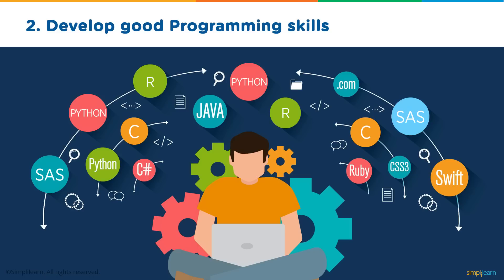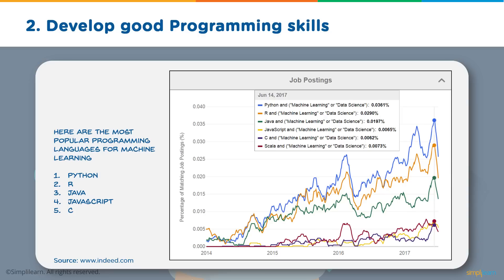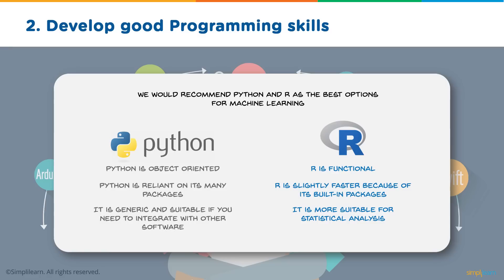Your next step to becoming a machine learning engineer is to develop good programming skills. There are a huge number of options: Python, C, C Sharp, Java, and so much more. Looking at a graph of job postings from 2014 to 2017, two languages dominate since 2015 — Python and R. These are the most wanted languages for machine learning engineers, closely followed by JavaScript and C. We recommend learning Python and R as they are the best options for coding machine learning algorithms.